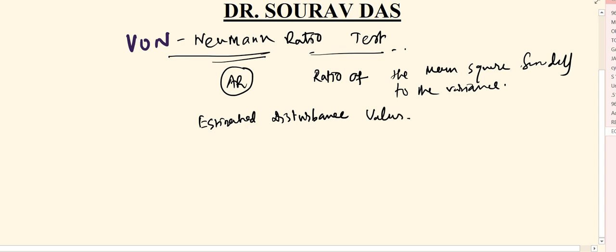It is sigma square by s square. In this given pattern, it is explained according to von Neumann: summation t equal to 2 to n of (e_t minus e_{t-1}) squared divided by (n minus 1), divided by summation of (e_t minus e_bar) squared by n.